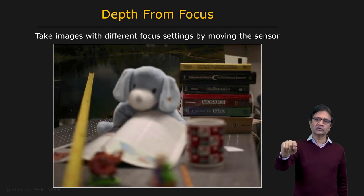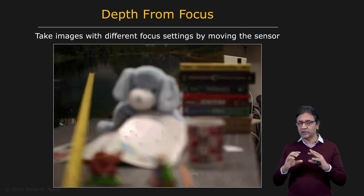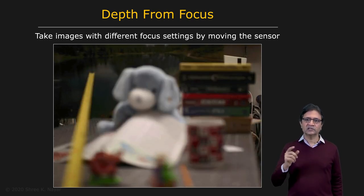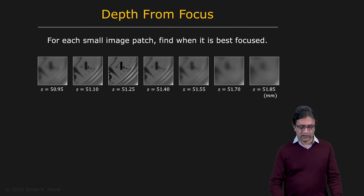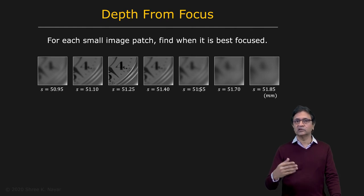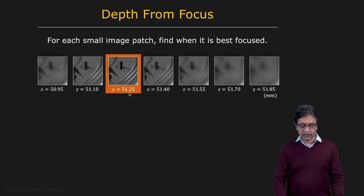When you look at a pixel through the stack, you're looking at essentially variations corresponding to that pixel and its neighborhood. The problem is pretty simple: we take each pixel and a patch around it and see when it comes into focus. For one particular patch, what's shown at the bottom are the sensor locations corresponding to each image. For this patch, at sensor location 51.25 millimeters, it is best focused.